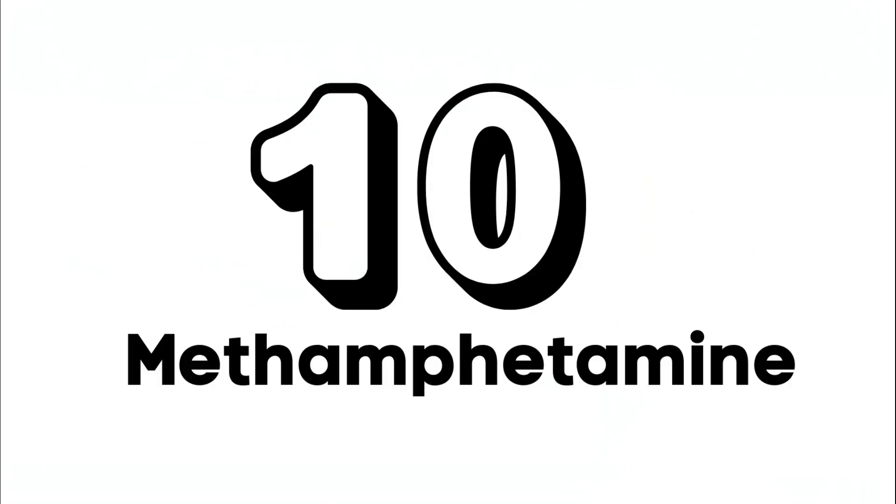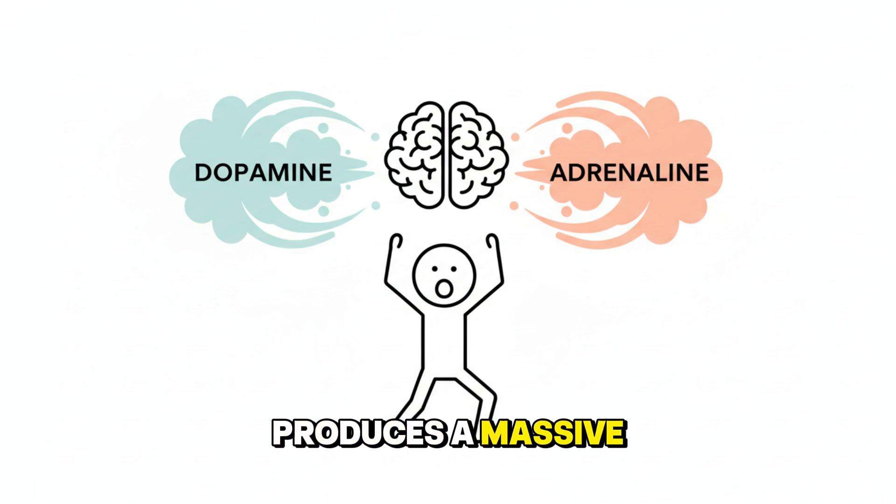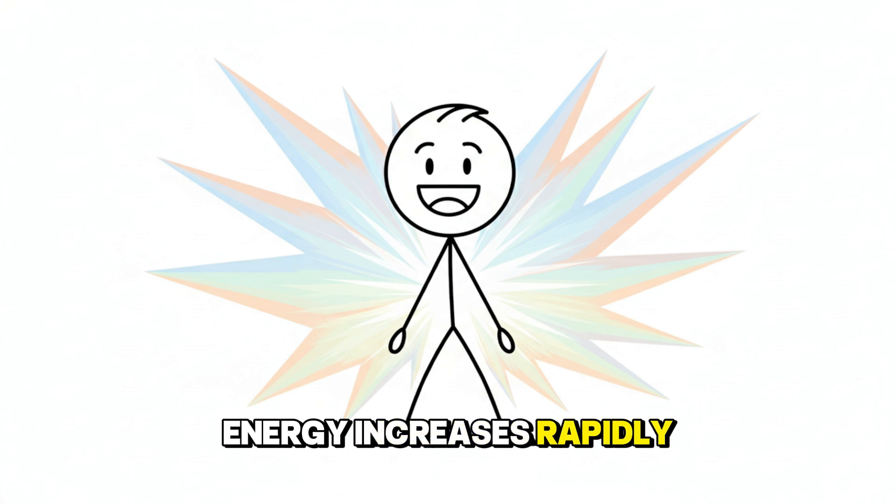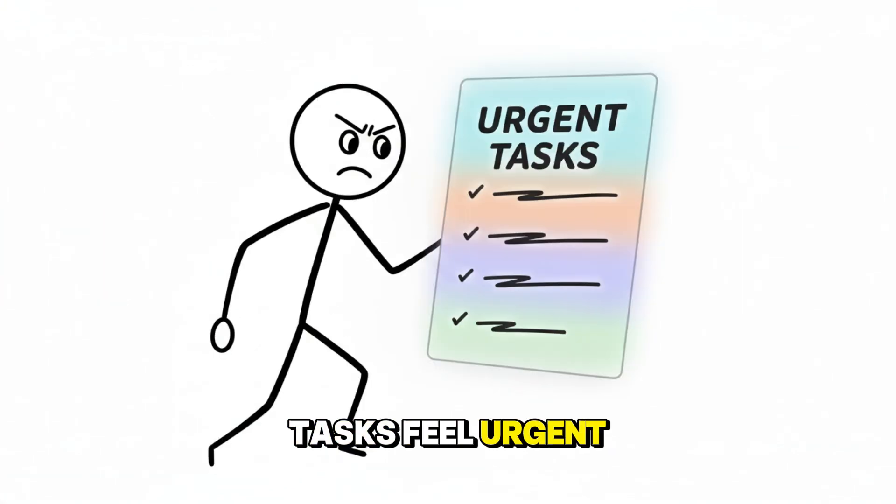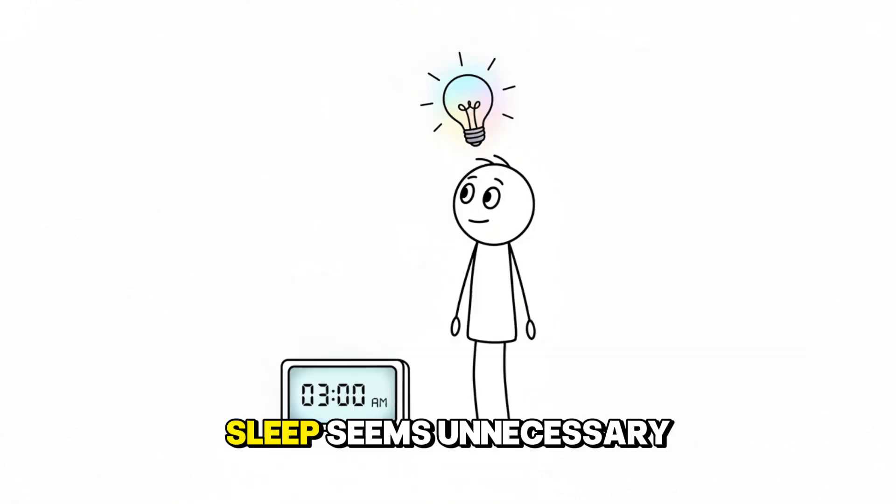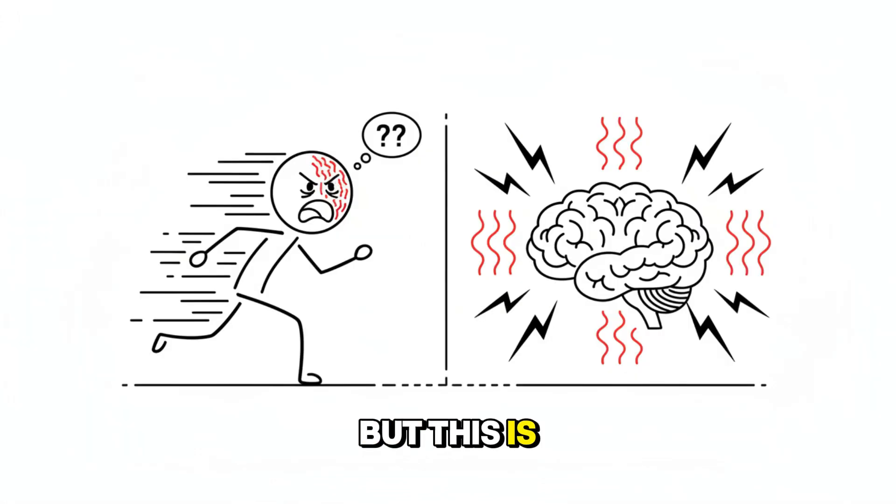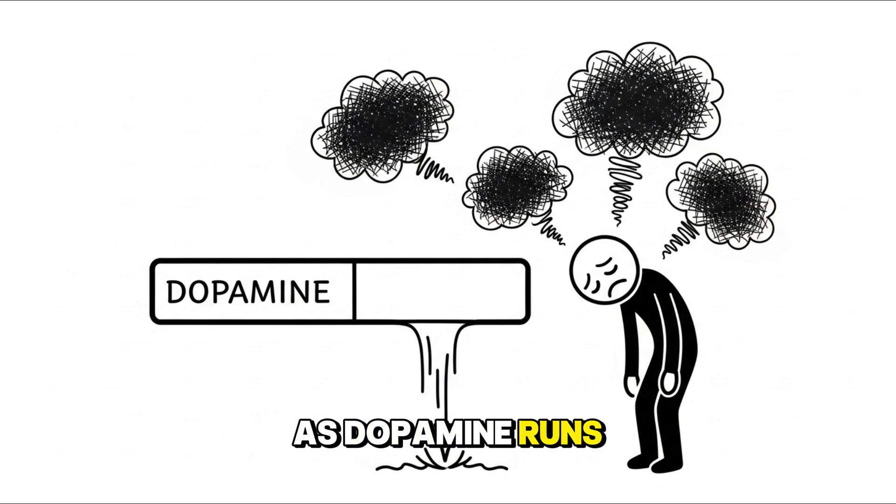Meth produces a massive release of dopamine and adrenaline. Energy increases rapidly, focus intensifies. Tasks feel urgent and meaningful. Sleep seems unnecessary. Ideas feel powerful. But this is overdrive, not clarity. As dopamine runs out, the crash is harsh. Exhaustion, emotional emptiness, and in severe cases, paranoia or delusional thinking.